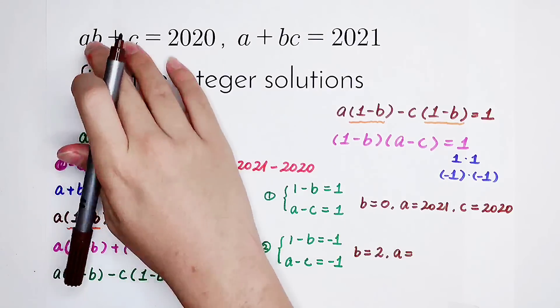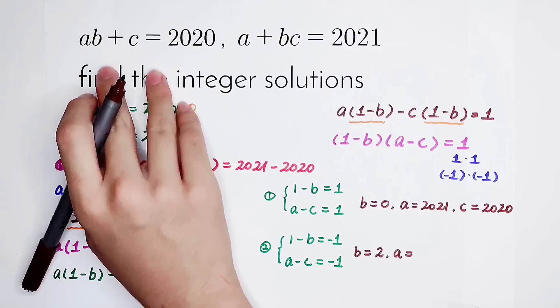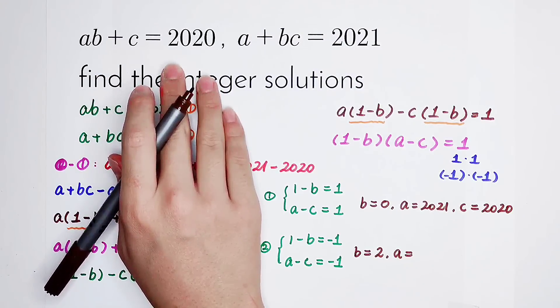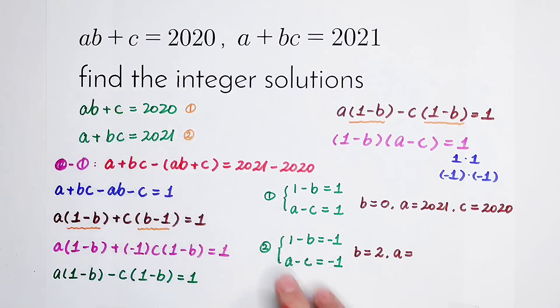So this 2, take it here. 2 times A plus C is 2020. And then 2A plus C is 2020. So we can get the value of A.